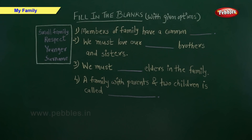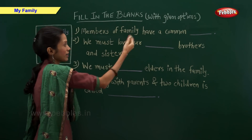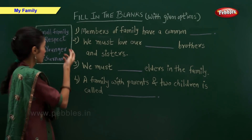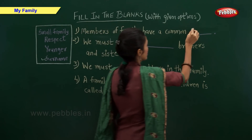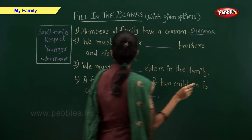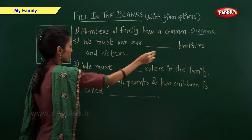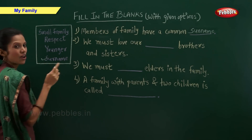Fill in the blanks with the given options. Members of a family have a common — what do they have in common? The correct answer is: surname. We must love our — brothers and sisters. The correct answer is: younger.